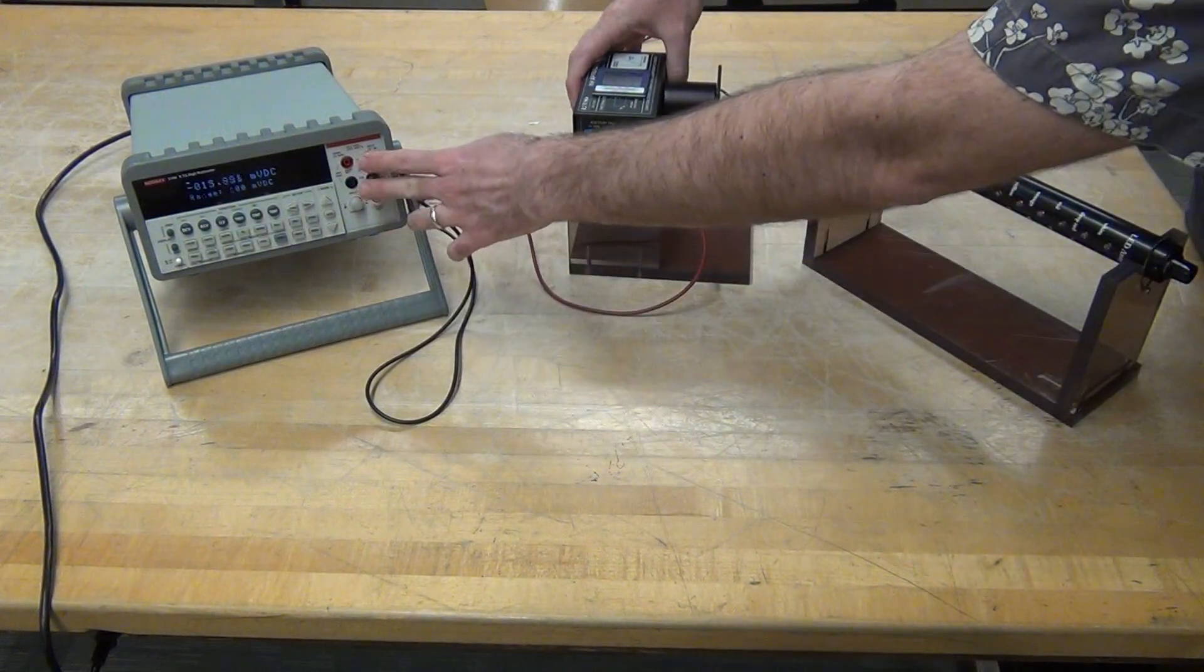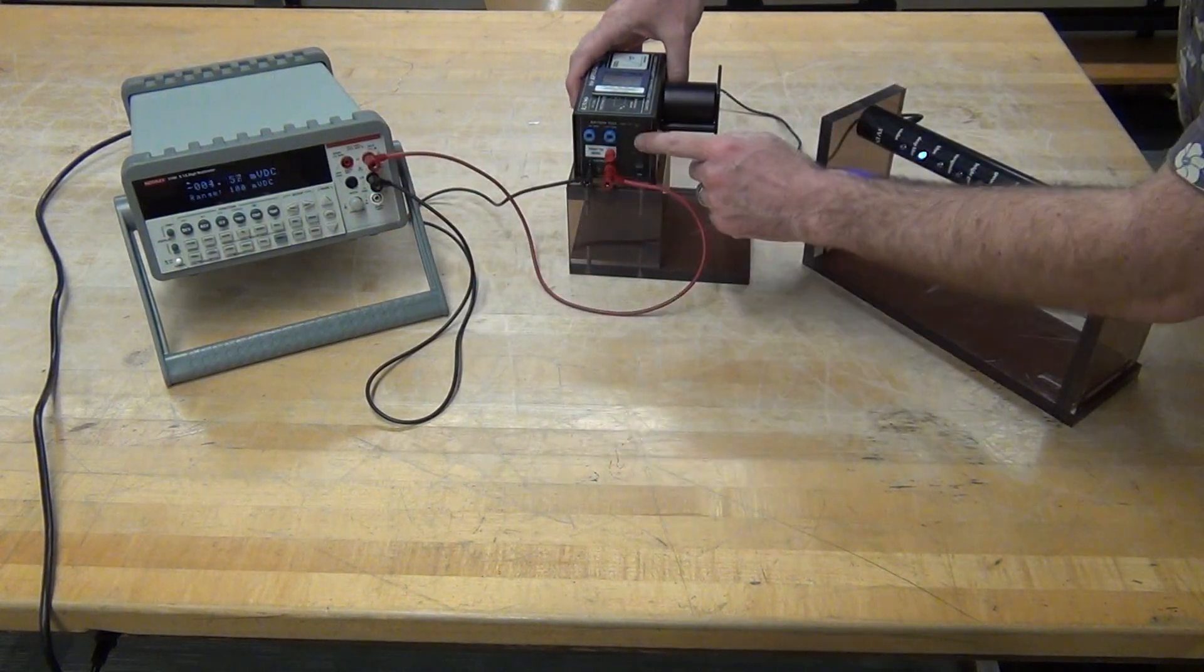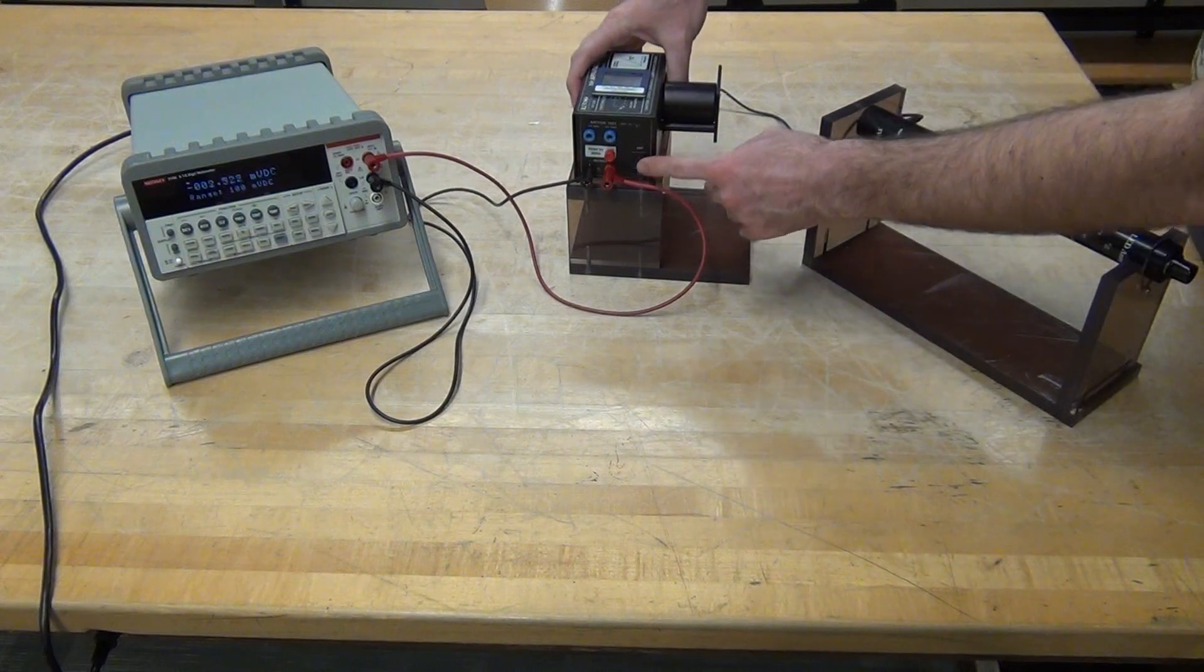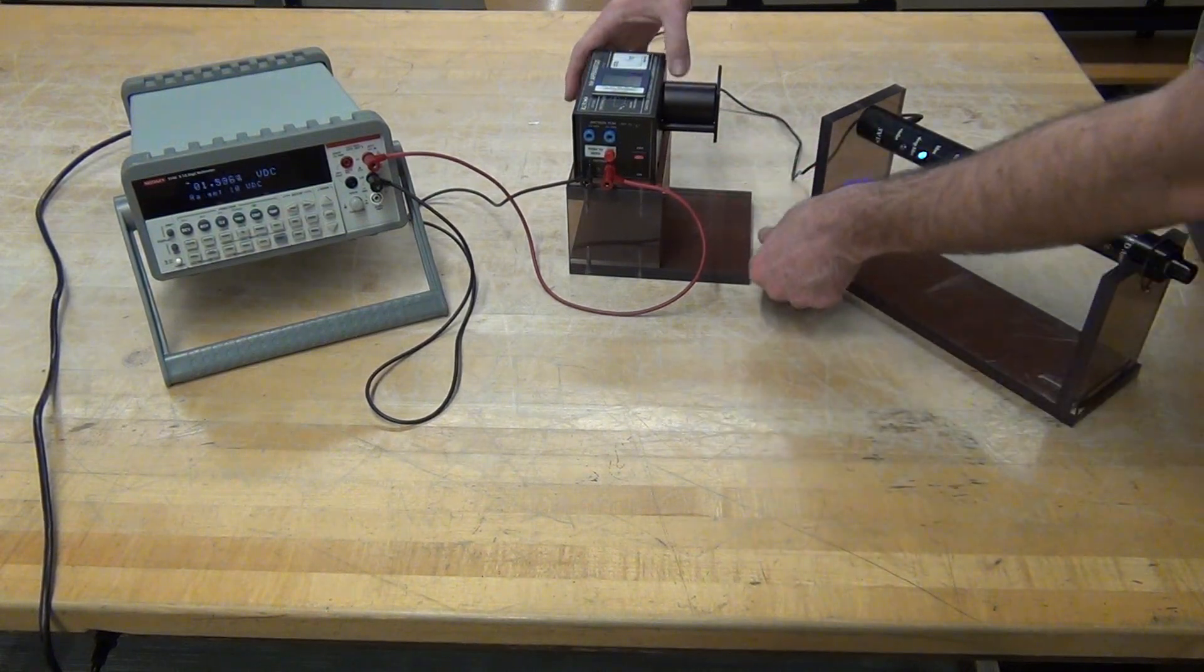The voltage meter, the Keithley is measuring the voltage on that. There's an on-off switch on the side here. You'll want to turn that on when you begin your experiment and off at the end.